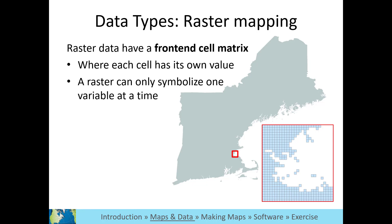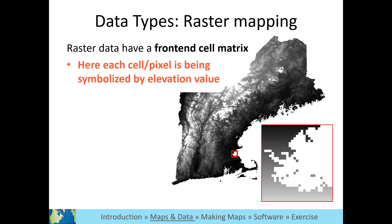Rasters can only symbolize one variable at a time due to how its attribute table functions. Here the map is color-coded based on a quantitative or numerical variable, elevation, where each unique pixel value is symbolized by a shade of gray stretching from black to white.